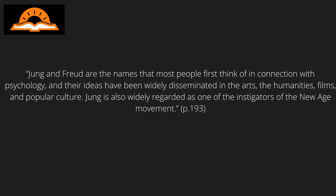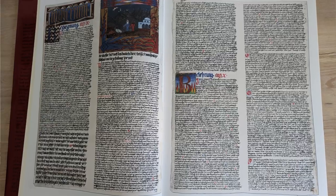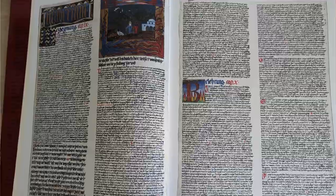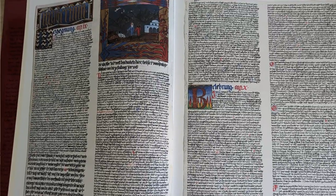Sonu Shamdasani wrote: 'Jung and Freud are the names that most people first think of in connection with psychology, and their ideas have been widely disseminated in the arts, humanities, films and popular culture.' Jung is also widely regarded as one of the instigators of the New Age movement. As a result, it is undeniable that the Red Book can be seen as one of the most important books in psychology, and if you really want to understand the ideas of Carl Jung, then it is definitely important to understand the Red Book as well.